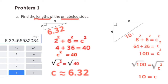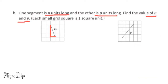Part b: one segment is n units long and the other is p units long. Find the value of n and p. Each small grid square is one square unit. I've added two lines to make an imaginary right triangle — one side length would be 3 and the other would be 1. We can use this to find the missing side length n.